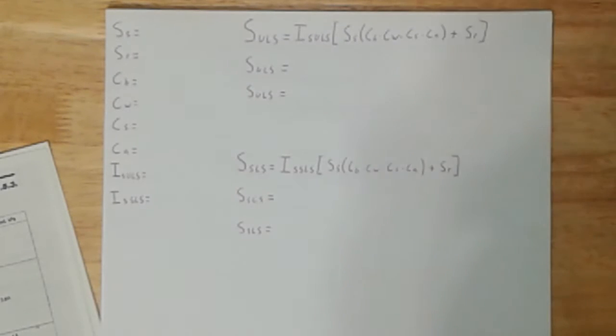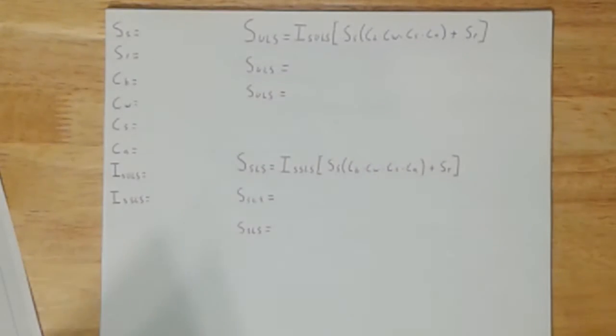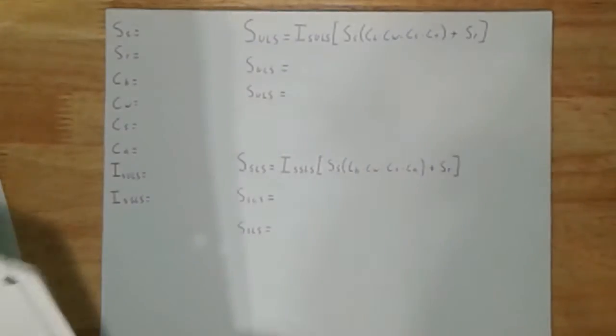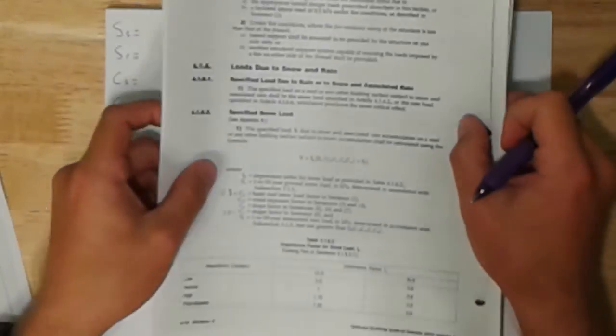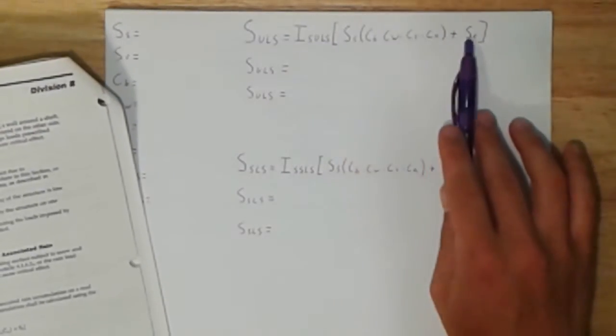So now I kind of drew up the equations already. If we're going to go to our building code, for this specific case we're going to go to section 4.1.6, loads due to snow and rain. So now if we look at that, right here we get this equation, which is this one right there.